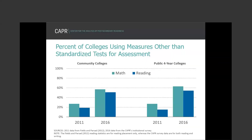Looking at national trends between 2011 and 2016 — and the trend has continued in the same direction — we see many more community colleges and public four-year colleges using measures other than standardized tests for assessment. They may still use standardized tests but are incorporating additional measures as part of their assessment system. This shift is slightly more pronounced in math and reading.